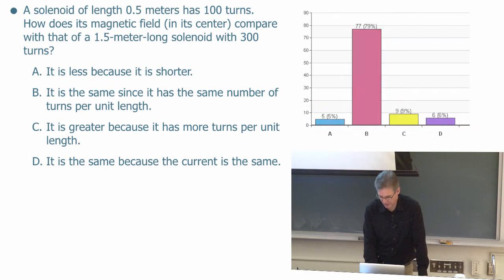Here we go and indeed most of you chose B and it is the same because it has the same number of turns per unit length which is 100 turns per 0.5 meters or 300 for 1.5 meters. Very good.